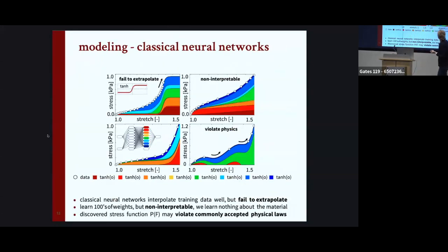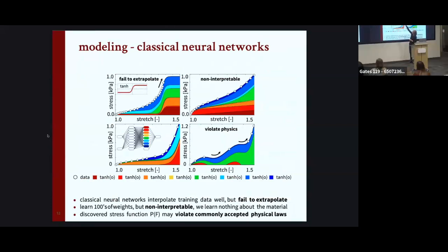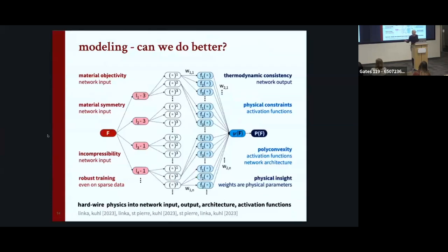Typical neural network activation functions — like tanh — all look very different from the stresses I've shown you. Some have a jump, some have a kink, some have horizontal tangents. These don't seem to be very useful for our purposes. For instance, after the last data point, the tanh function just flattens out, so you'd predict something entirely random beyond your training range. Also, these parameters are non-interpretable, and most importantly they violate physics — you see oscillations and overfitting. In clinical or biosimulations, this can be quite critical to the patient. So the idea is: can we do better? We want to hardwire all the physics knowledge that material scientists and mechanics people have acquired over the last 50 years and build this into the network right from the get-go.